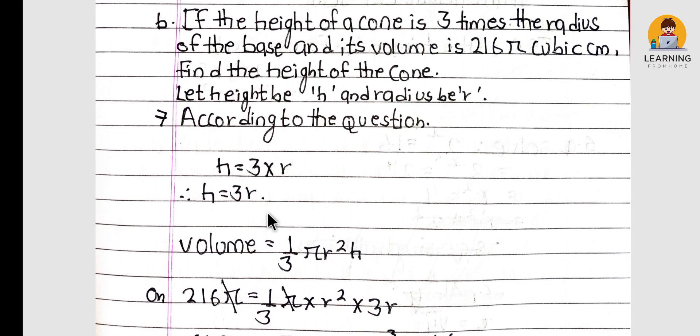Question: If the height of a cone is 3 times the radius of the base and its volume is 216π cubic cm, find the height of the cone.